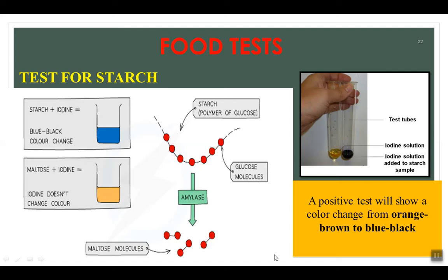We are going to start by testing for carbohydrates — this includes starch and sugars such as glucose. For the test for starch, place 2 cm³ of food solution into a test tube, then add a few drops of iodine solution, which is orange in color. If starch is present, the iodine solution will turn blue-black. However, if there is no starch, the iodine color will remain unchanged.